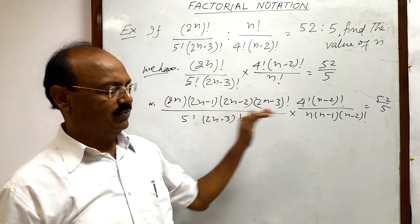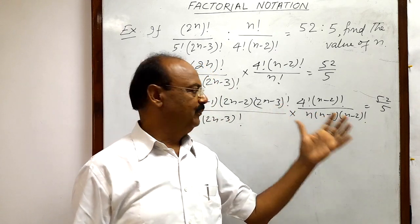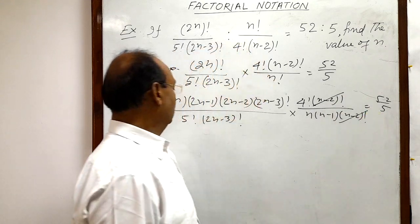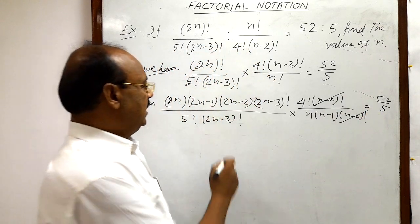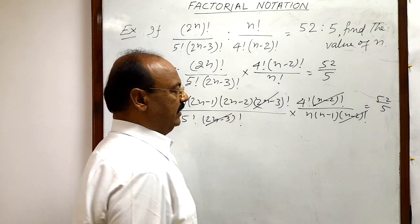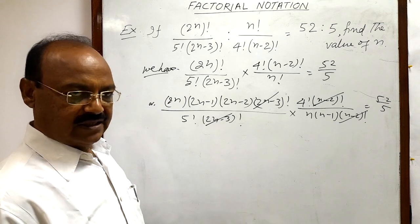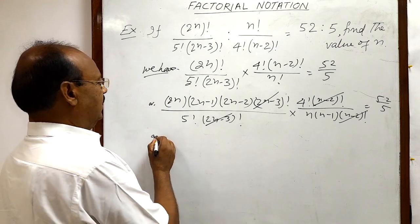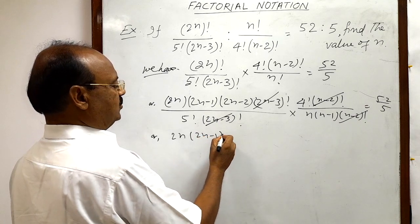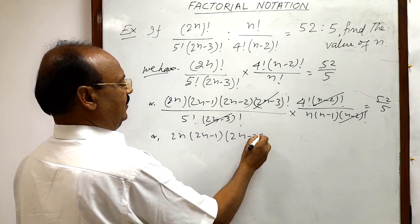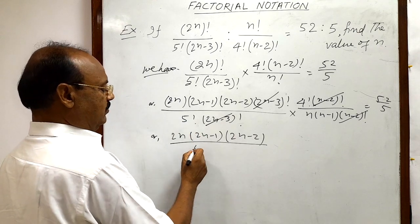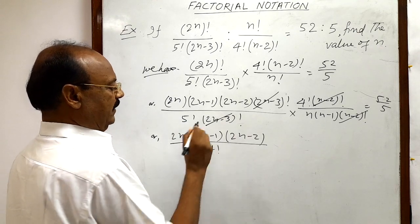Hope you are following — it is very simple. So (n-2)! and (n-2)! will cancel out. Similarly, (2n-3)! and (2n-3)! will cancel out. Now we are getting 2n times (2n-1) times (2n-2) divided by 5!, and 5! can be written as 5 times 4!, so that 4! cancels with 4! in the numerator.